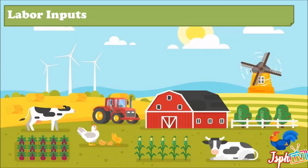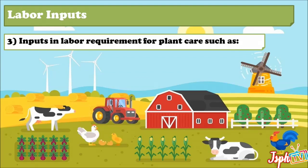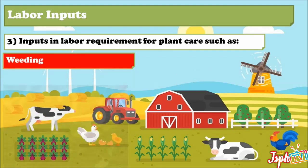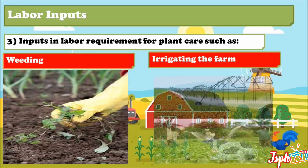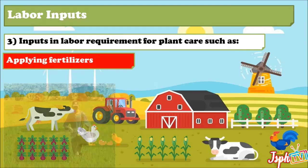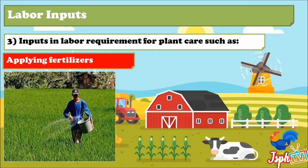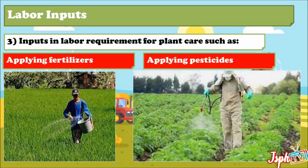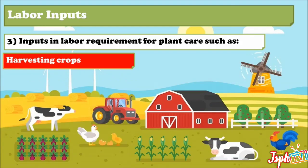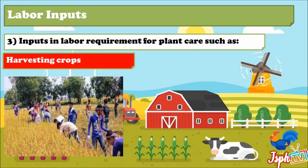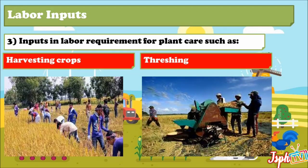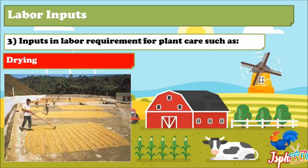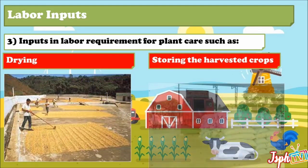Third, inputs in labor requirements for plant care include weeding, irrigating the farm, applying fertilizers, applying pesticides, inspecting crops, threshing, drying, and storing the harvested crops.